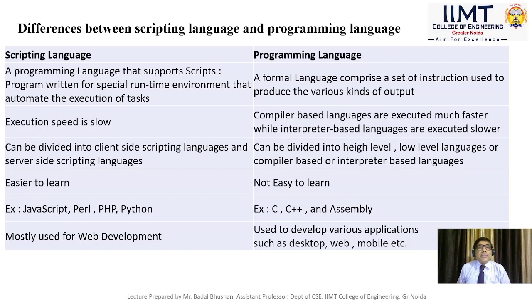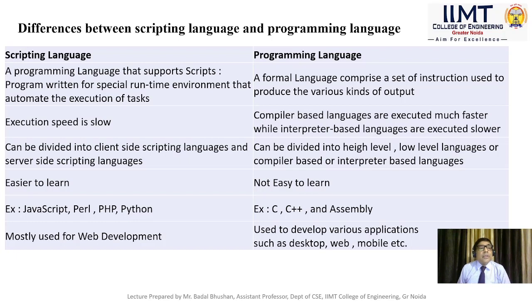Now let us understand the difference between scripting language and programming language. A scripting language is a programming language that supports scripts — programs that run in a special runtime environment that automates the execution of tasks. Whereas a programming language is a formal language comprised of a set of instructions used to produce various kinds of outputs. In scripting language, execution speed is very slow.